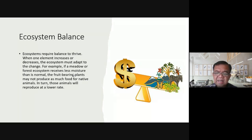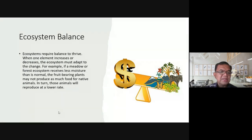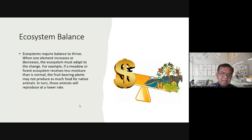When an extreme portion of a species is killed off, eventually the remaining species disappear too — and that is frightening. Ecosystems require balance to thrive. When one element increases or decreases, the ecosystem must adapt. For example, if a meadow or forest ecosystem receives less moisture than normal, food-bearing plants may not produce as much food for native animals, and in turn those animals will reproduce at a lower rate.